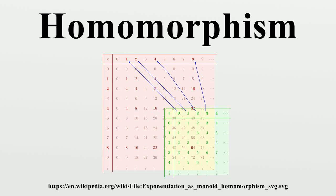In abstract algebra, a homomorphism is a structure-preserving map between two algebraic structures. The word homomorphism comes from the ancient Greek language, meaning 'same' and 'form or shape.' Isomorphisms, automorphisms, and endomorphisms are special types of homomorphisms.